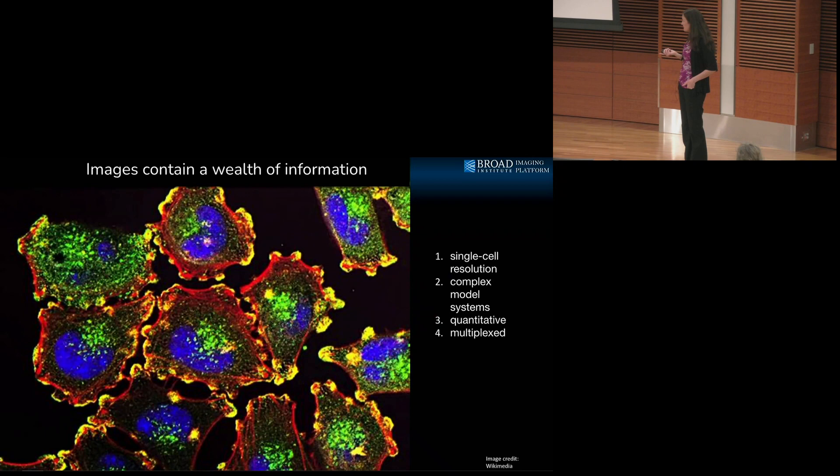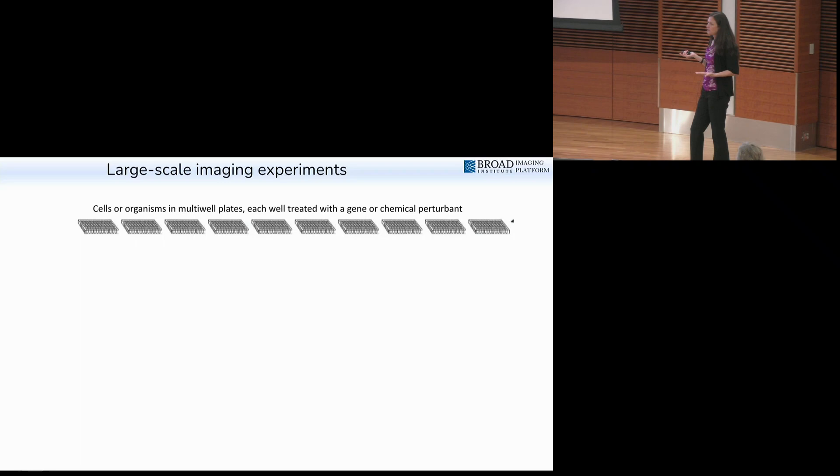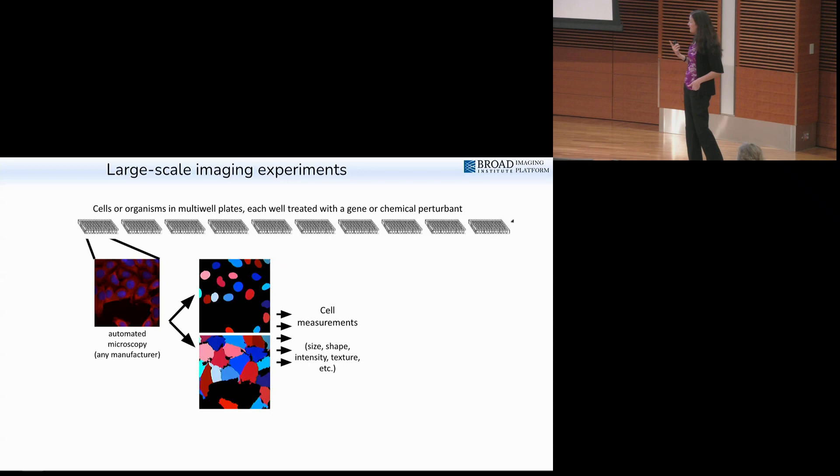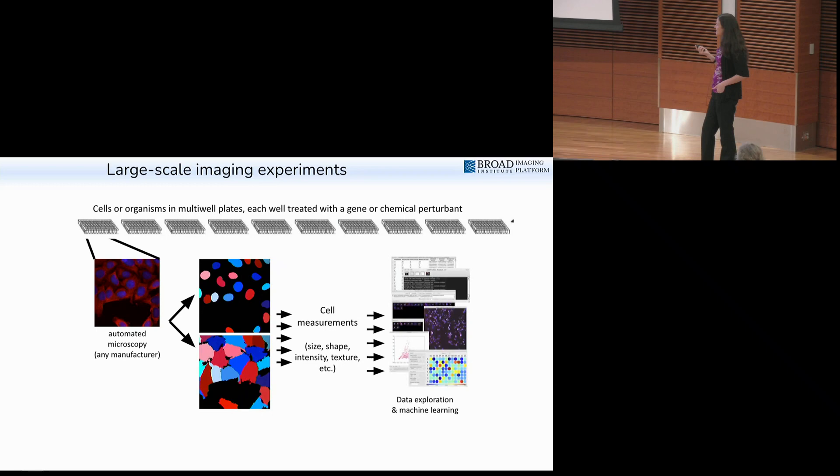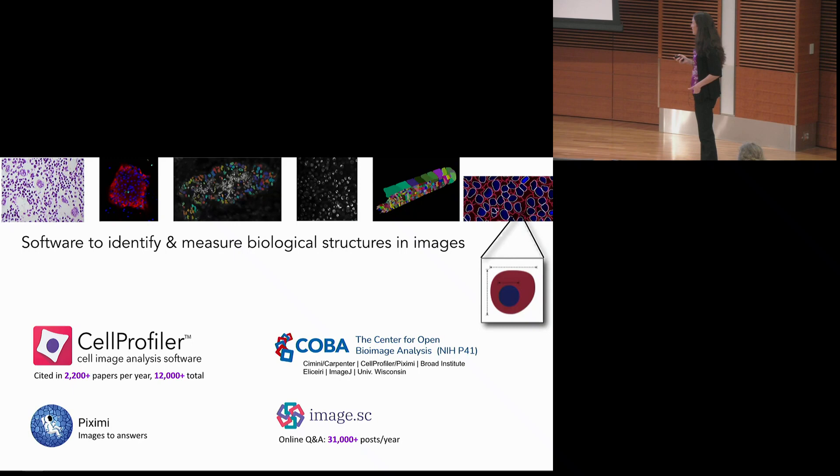My research is based on the premise that images have a ton of information in them. This information is inherently single cell resolution. We can take images of all kinds of things - cultured cells growing in a dish, but also tissue samples and whole organisms and very complex co-cultures. Really, a wide variety of biological systems are compatible with imaging. Most importantly to this talk, it's a quantitative modality. We can quantify all kinds of features from these images and learn great things. And it's also multiplex.